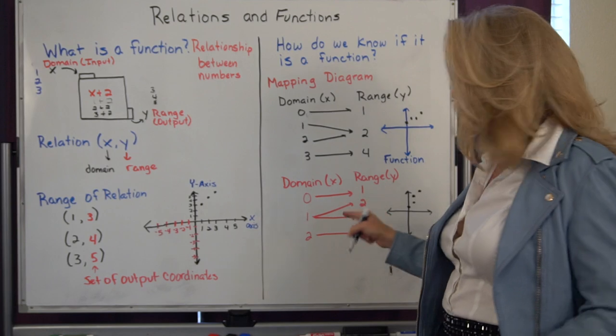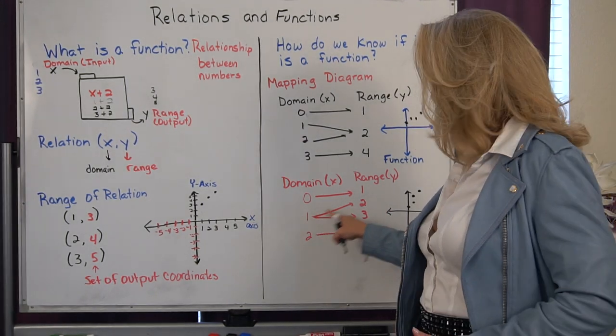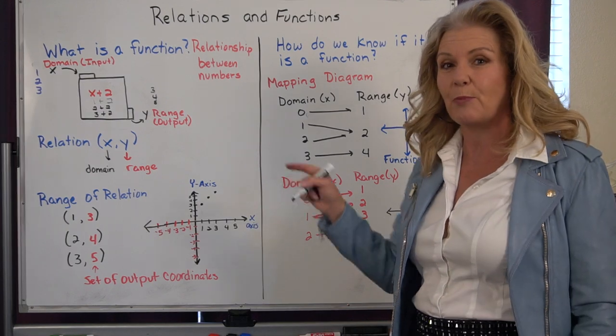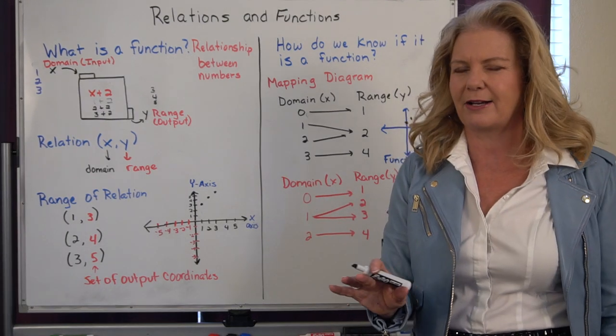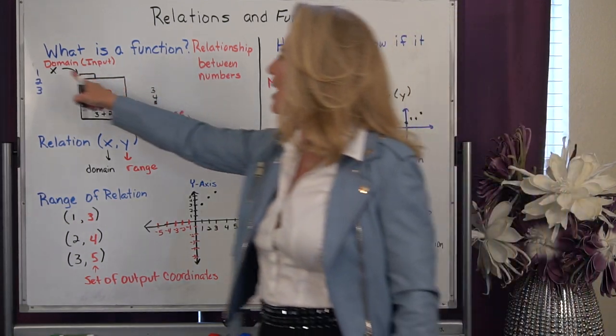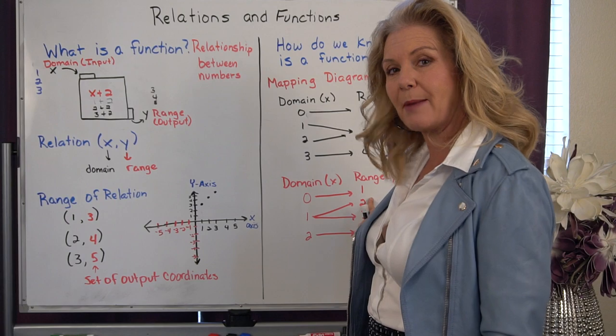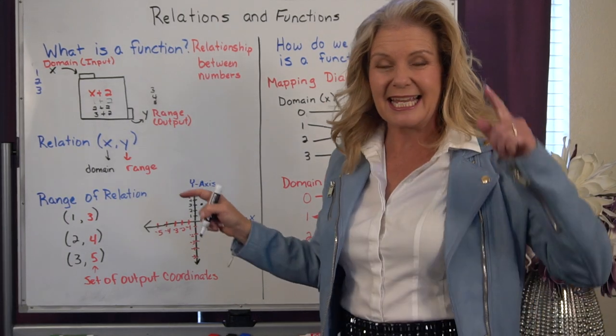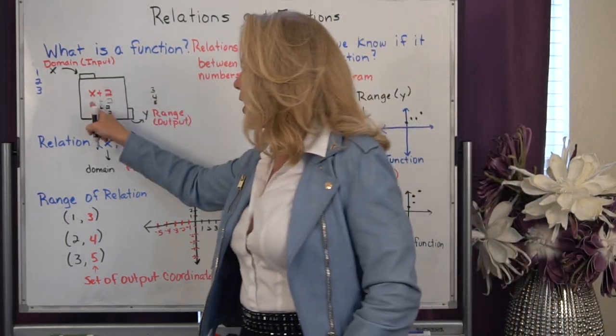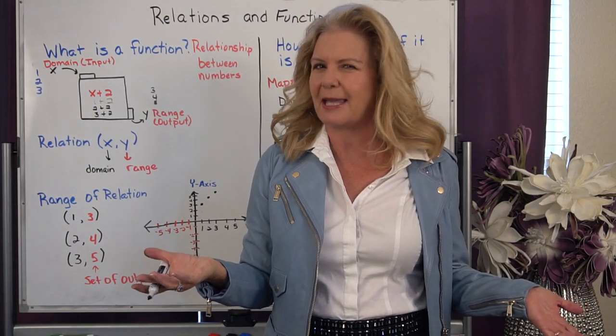If, however, I have a single input number, and it goes to two separate output numbers, that means it's not a function. Now think why that would work. How could I put one in this machine and get two to pop out, and then I put in the exact same number, one, and it goes through the same equation, and I get a different answer? That doesn't make sense.